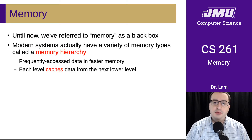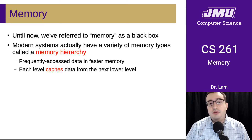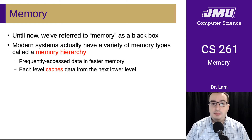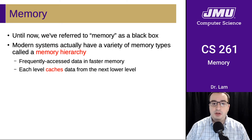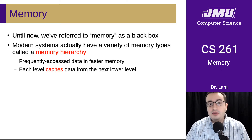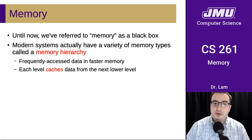We've been referring to memory as something of a black box. We've talked a little bit about flip flops and how they might play a role in this. But in reality, modern computer systems actually have a huge variety of memory types called a memory hierarchy. The idea is that we're going to have smaller pools of faster memory located closer to the CPU, and those are going to hold the data that is more frequently accessed. Then we have other levels that are increasingly further from the CPU — increasingly slower, but also cheaper so that we can make them larger.